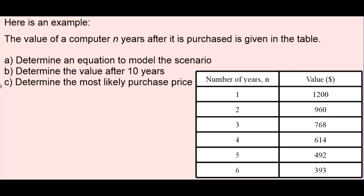An initial value would happen when the x value, or in this case the n value, would equal zero. But our first value on the table is actually after one full year. So the value of our computer after one year is $1200.